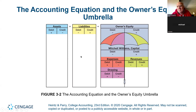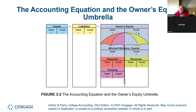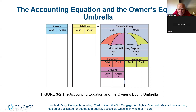Here is the famous umbrella. Assets — normal balance, meaning they go up with a debit. Liabilities go up with a credit. Equity goes up with a credit. Notice the components of equity: every time you have a sale or revenue, equity goes up. When you increase an expense with a debit, the equity goes down. And if the owner takes money out, that reduces equity.